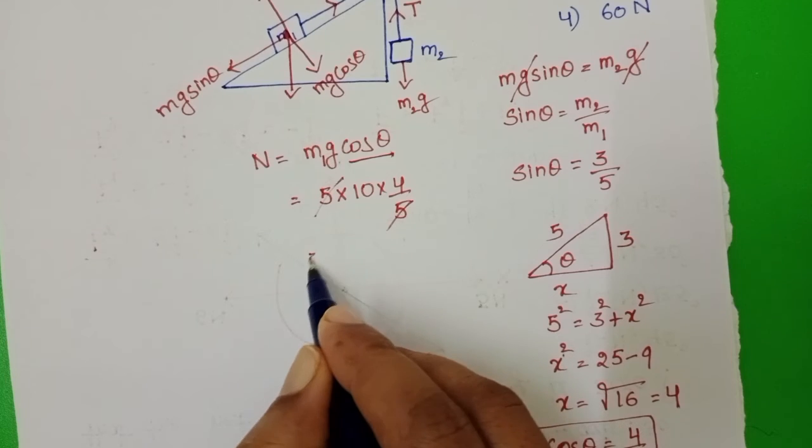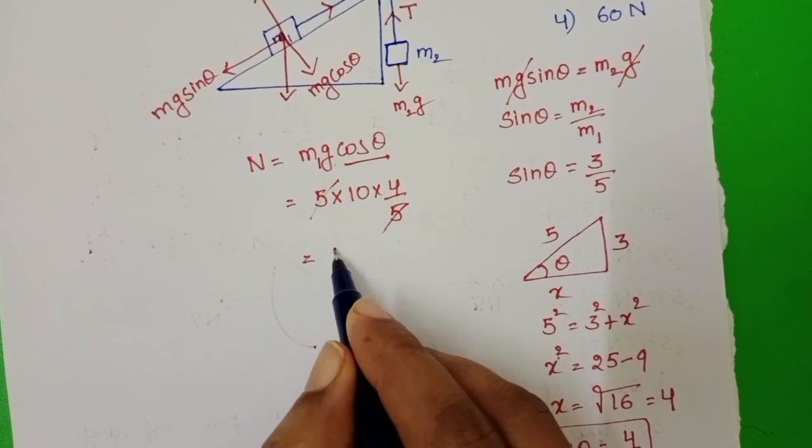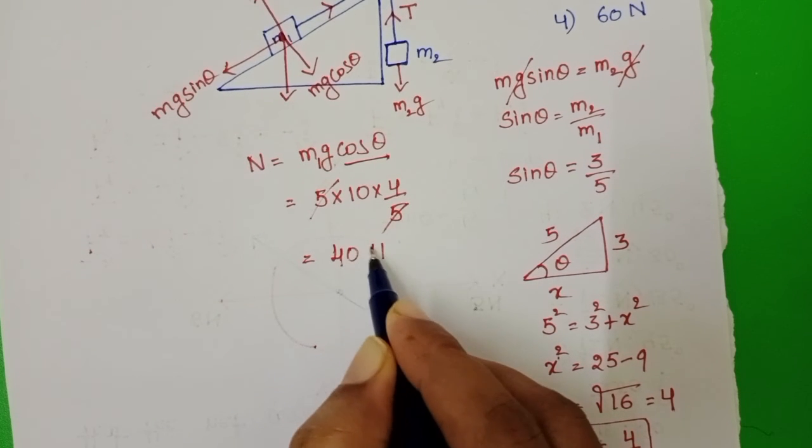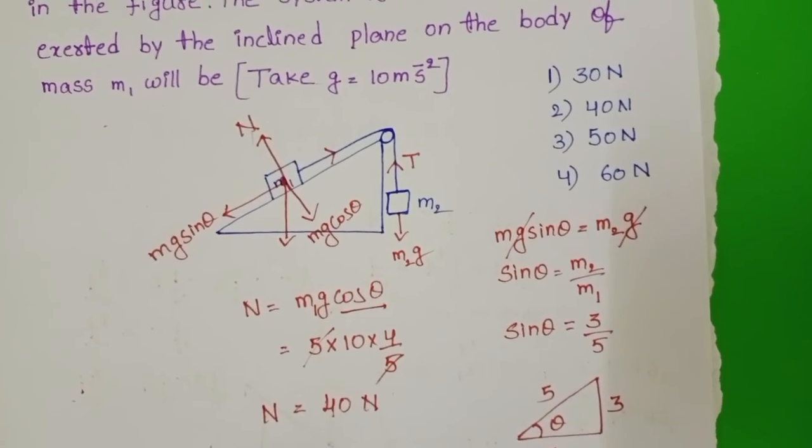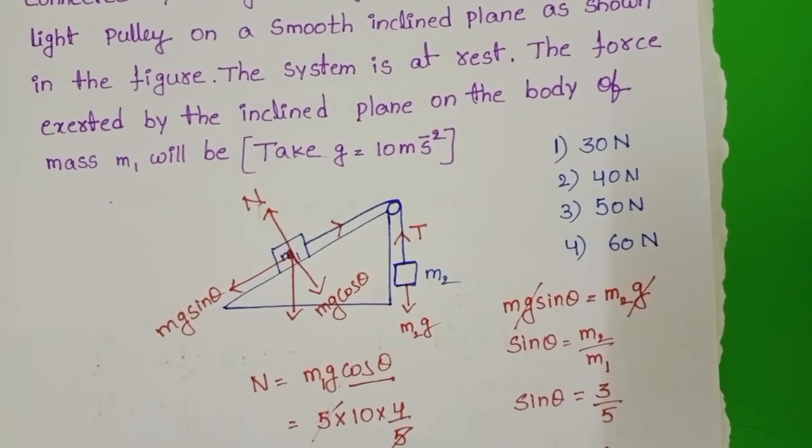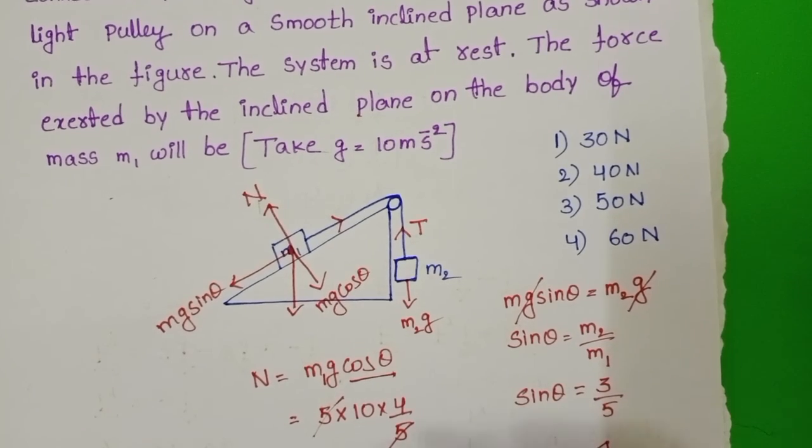5 gets cancelled. 10 into 4 equals 40N. Force exerted by the inclined plane on the body of mass M1 is 40N. Second option is correct.